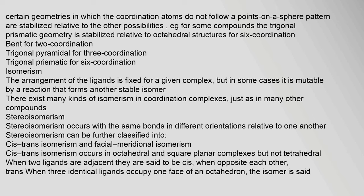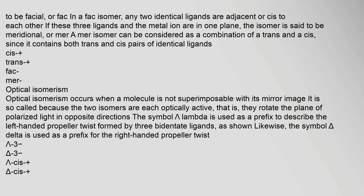Stereoisomerism occurs with the same bonds in different orientations relative to one another. Cis-trans isomerism occurs in octahedral and square planar complexes but not tetrahedral. When two ligands are adjacent they are said to be cis; when opposite each other, trans. When three identical ligands occupy one face of an octahedron, the isomer is said to be facial, or fac. In a fac isomer, any two identical ligands are adjacent or cis to each other. If these three ligands and the metal ion are in one plane, the isomer is said to be meridional, or mer.